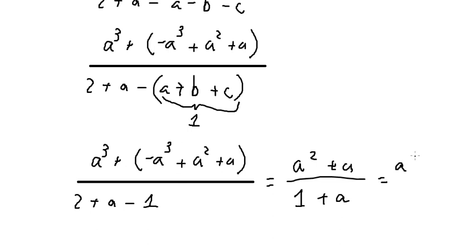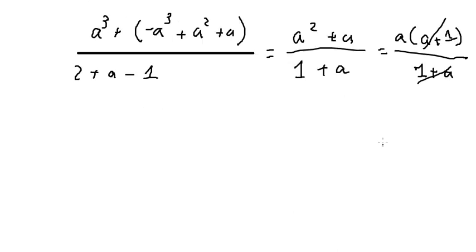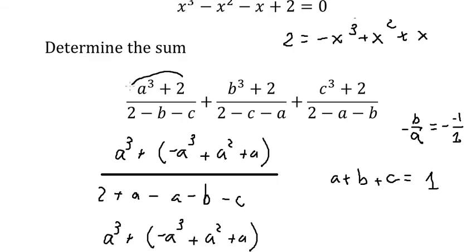We have a plus 1 divided by 1 plus a. This one cancels, cancel. We got a. So this one you got a, this one you call b, this one you call c.